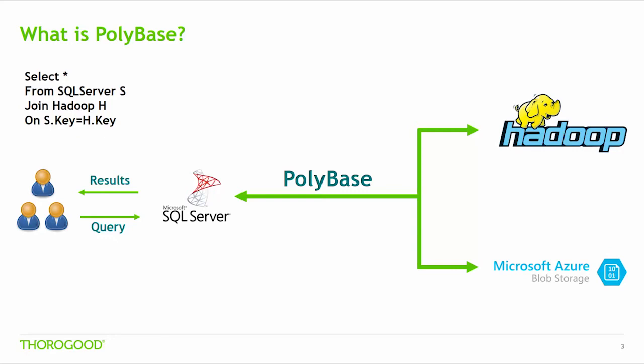PolyBase allows you to connect SQL Server 2016 to Hadoop and Azure Blob Storage. As a user, you can write a simple T-SQL statement like the one here — a SELECT STAR query joining a relational database to a Hadoop file on a common key. Once the query is submitted to SQL Server, the SQL engine does a cost-based analysis optimization on whether to stream the dataset back or convert the T-SQL statement into a MapReduce job. This job will be pushed into Hadoop and take advantage of the parallel processing, streaming only the results back. This is all done in T-SQL, so there is no need for users to learn MapReduce, Java, or any other language in order to take advantage of PolyBase.